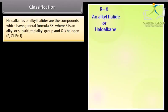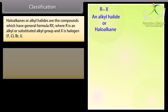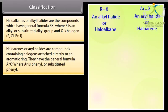Classification. Haloalkanes or alkyl halides are compounds which have the general formula RX, where R is an alkyl or substituted alkyl group and X is the halogen F, Cl, Br, or I. Haloarenes or aryl halides are compounds containing halogens attached directly to an aromatic ring. They have the general formula ArX, where Ar is phenyl or substituted phenyl.